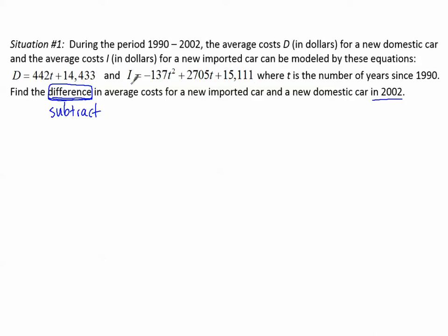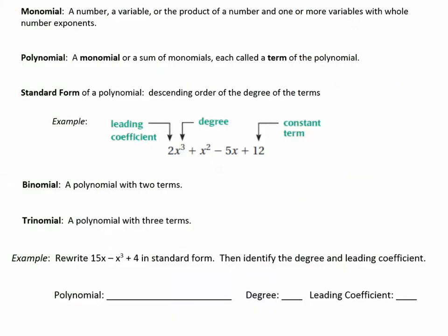These kinds of functions are called polynomials. Poly means many — there are many terms in each of these functions. Let's talk about what a polynomial is before we begin subtracting. First, let's start with a monomial. That's a number or a variable or the product of a number and one or more variables with whole number exponents. Mono is the prefix that means one — one term. Whereas poly, for polynomial, means many terms.